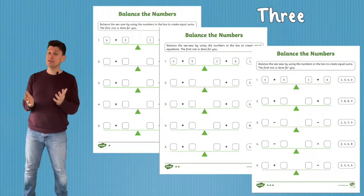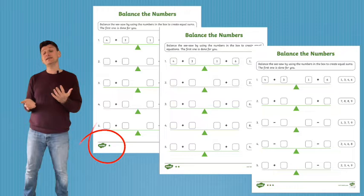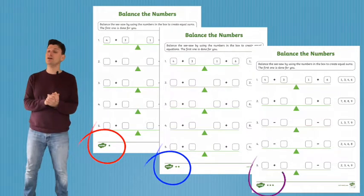The worksheets are differentiated using Twinkle's three star method. One star being the easiest, two stars is more difficult, and three stars is more challenging still.